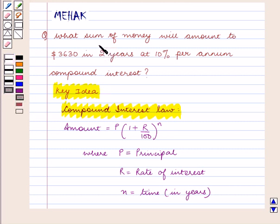According to the question, we need to find the money which is invested that amounts to $3,630 at 10% per annum after 2 years.